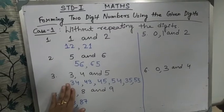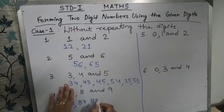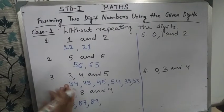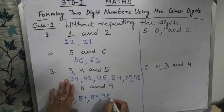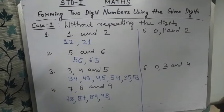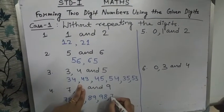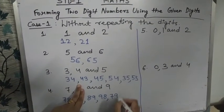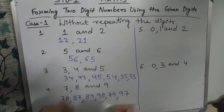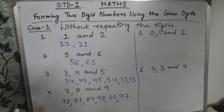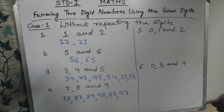Now cover 8 and make numbers with 7 and 9: we get 7, 9 — that is 79, then reverse — 9, 7 — that is 97. So counting them: 1, 2, 3, 4, 5, 6 — we got 6 numbers in total.